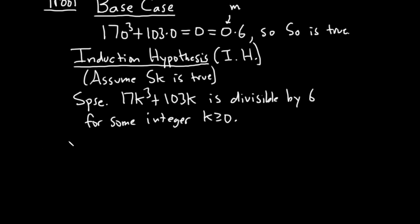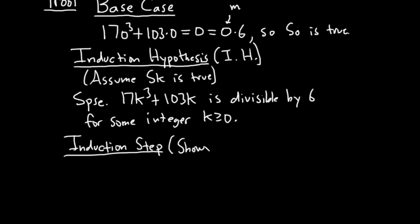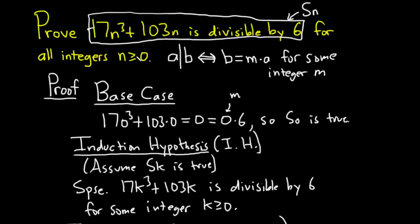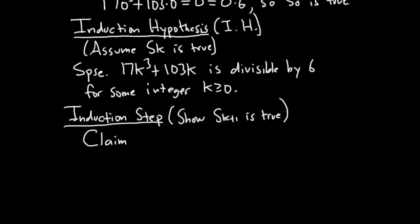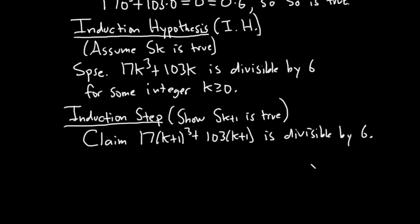The next step is the induction step. In this step, we have to show S sub k plus 1 is true — that is, show our statement is true when n equals k plus 1. So the claim is that 17 times (k+1) cubed plus 103 times (k+1) is divisible by 6.